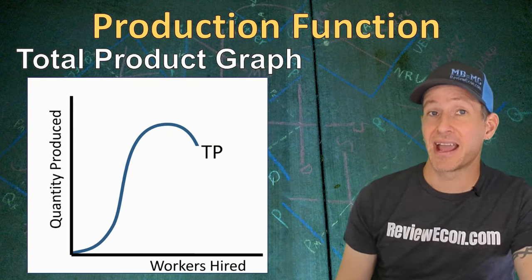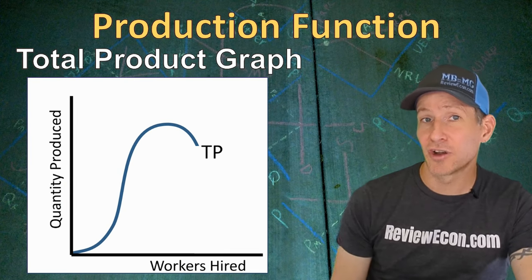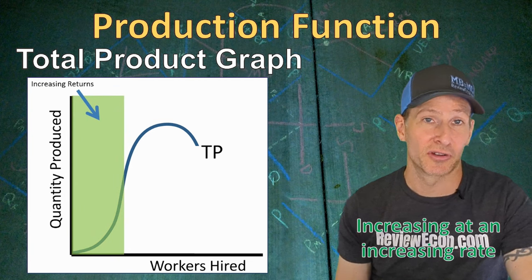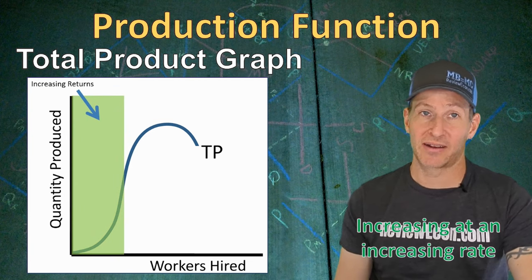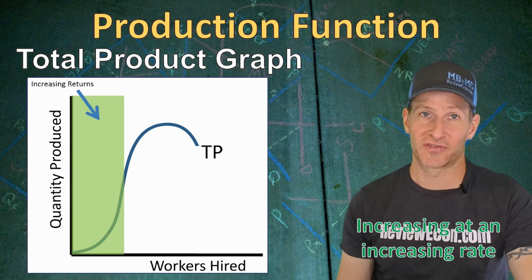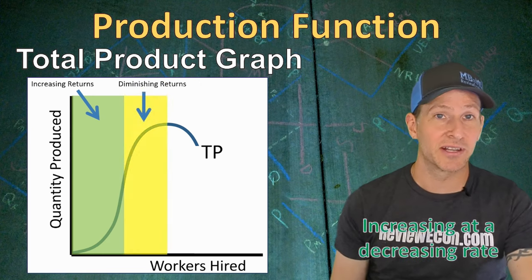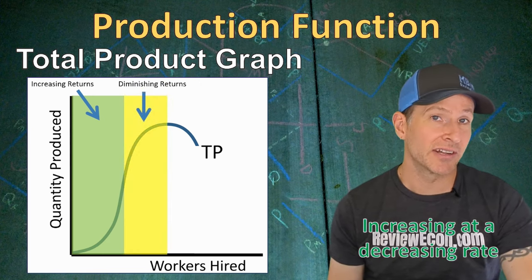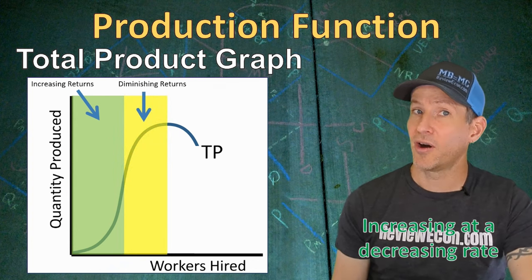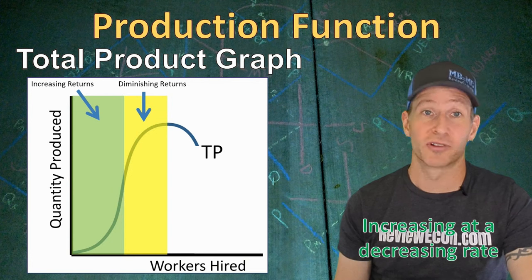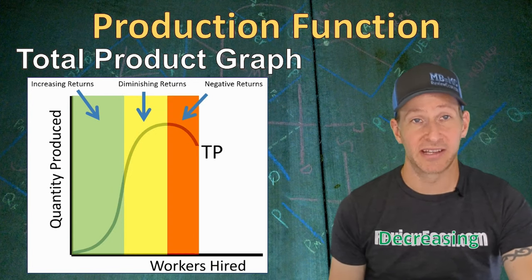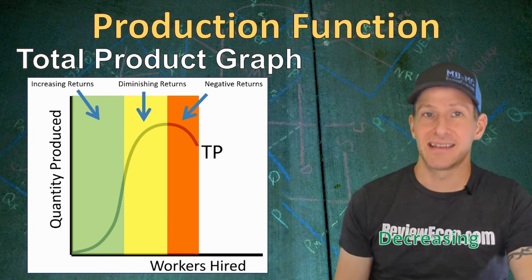If we graph out the total product curve for this firm, we see different phases of production as more workers are hired. At low quantities of workers, each additional worker increases total product at an increasing rate — we call that increasing marginal returns, or increasing returns for short. Then we reach a phase where hiring more workers still increases total product, but at a decreasing rate — that's diminishing marginal returns or diminishing returns. Finally, as we hire more workers, total product begins to fall, and we call that phase negative returns.